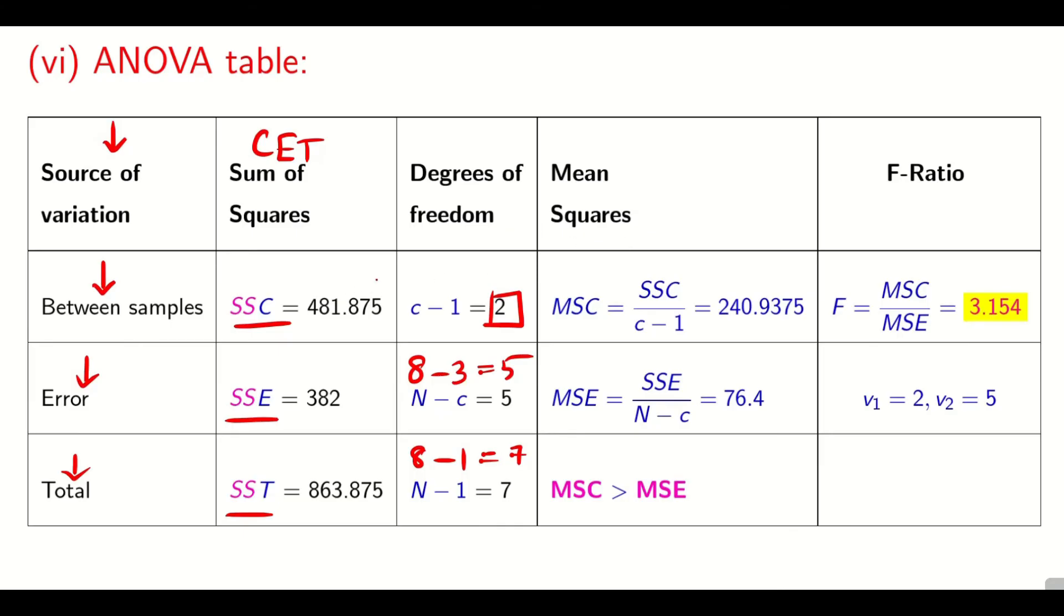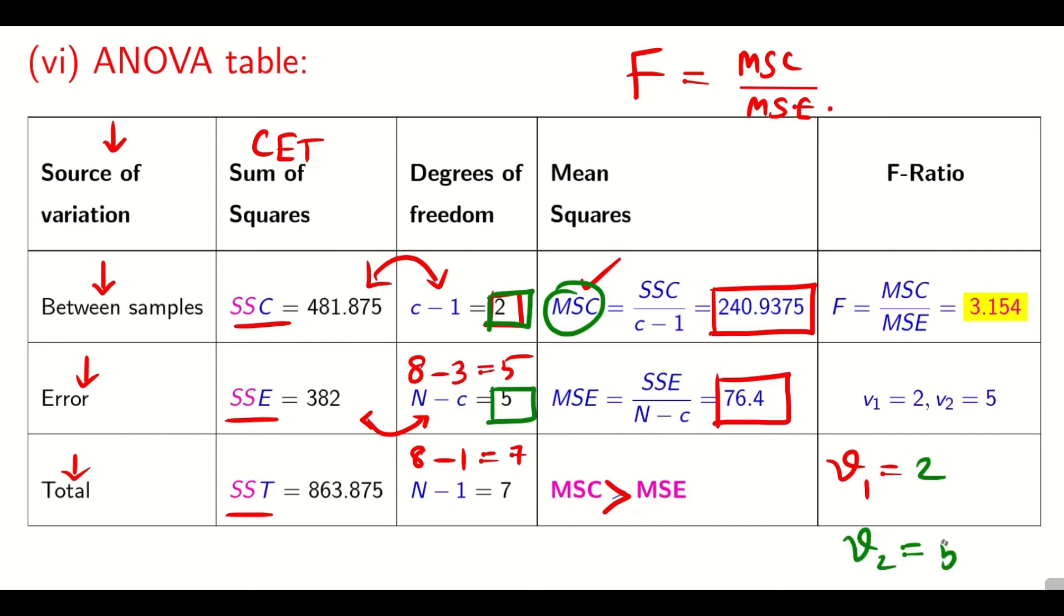Now MSC, I said mean square value is very simple. SSC divided by c - 1. SSE divided by N - c. Now as I said for F value, we have to always take the larger value to the numerator. Here MSC is larger. So MSC is greater than MSE. So my F value formula is going to be MSC divided by MSE. Now as I said earlier, v₁ is going to be degree of freedom for the greater value. Here the greater value is MSC and degree of freedom is 2. And v₂ is going to be the degree of freedom for the denominator. It is going to be 5.